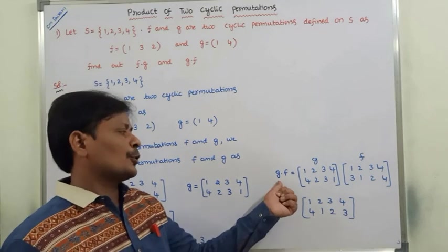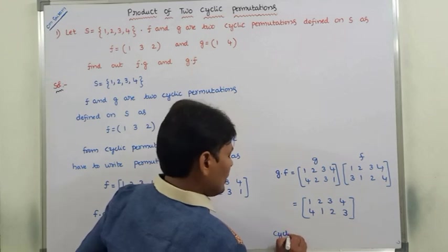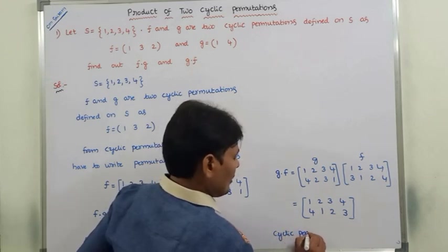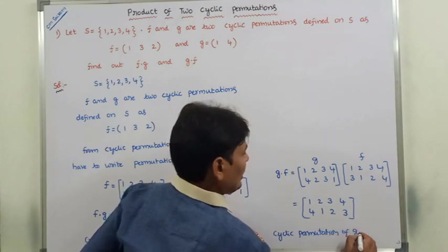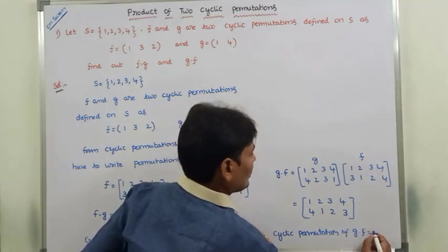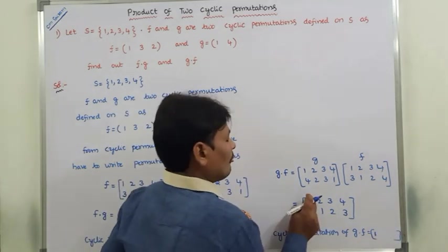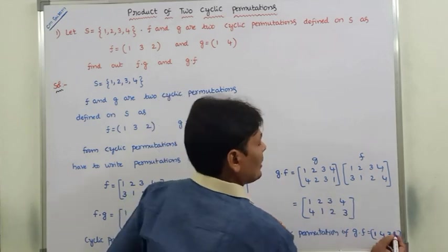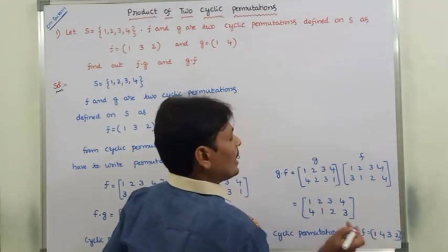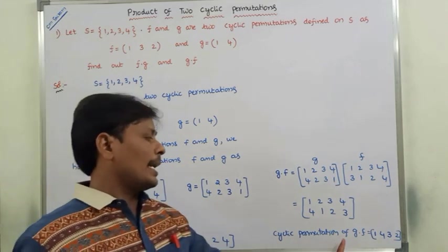This is the product of the two permutations G∘F. The cyclic permutation of G∘F: starting with element 1 — 1's image is 4, 4's image is 3, 3's image is 2, 2's image is 1. So the cyclic permutation of G∘F is (1, 4, 3, 2), which also has cyclic length 4.